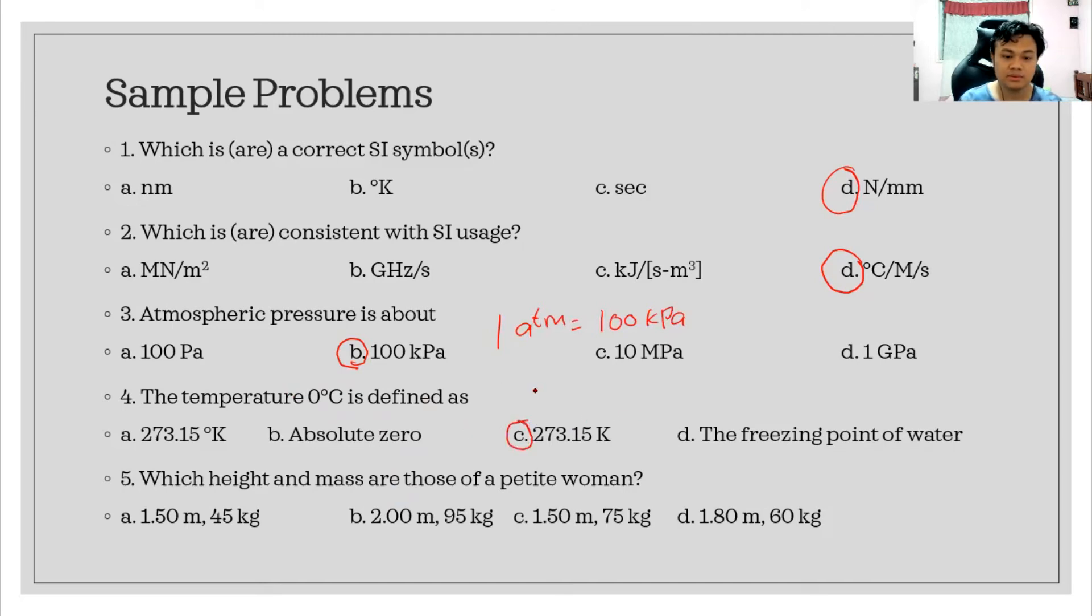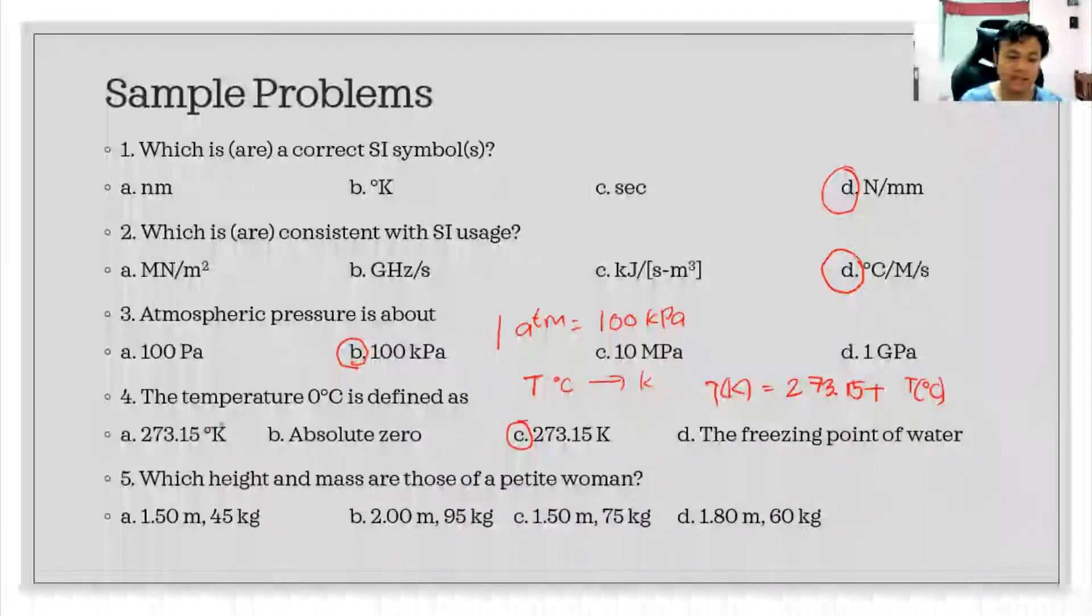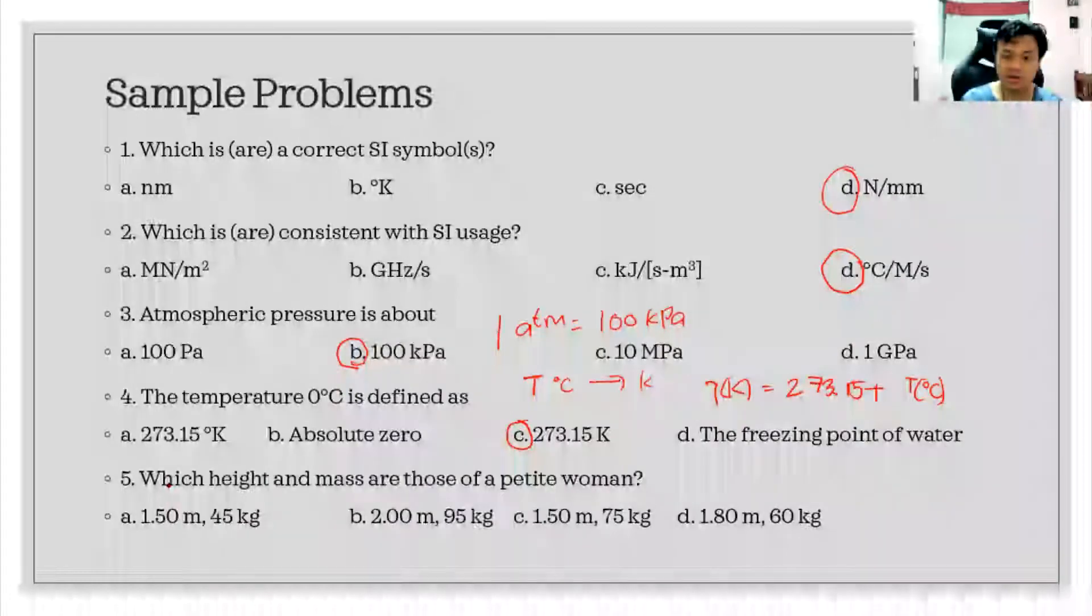The temperature zero degree Celsius is defined as letter C. To convert the temperature from Celsius to Kelvin, you have to add 273.15. You have 273.15 plus the temperature in degrees Celsius. Why not degrees Kelvin? Because it's not the appropriate unit. The only unit is Kelvin, not degrees Kelvin.